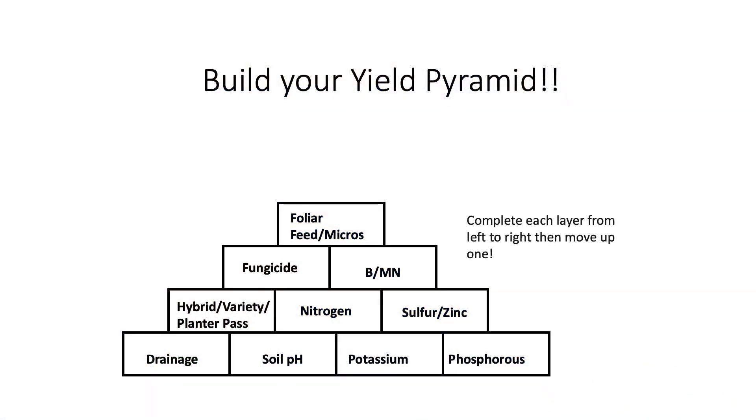Today's episode is going to be on soil pH. Soil pH affects many things in our crop production system. The availability of nutrients as well as the efficiency of the fertilizer that you apply is directly correlated to your soil pH. Things like your soil biology and microbial activity are also affected by soil pH levels. Herbicide efficacy as well as some herbicide carryover issues are all directly impacted by your soil pH, which is why it is our number two building block.